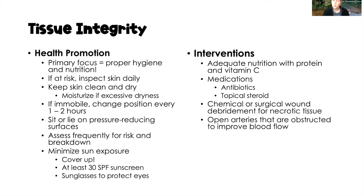If your client is immobile, we want to change their position every one to two hours, and we want to use pressure-reducing surfaces — such as a mattress, pad, or foam — to reduce pressure on bony prominences, especially for clients at high risk or with prolonged immobility. We also want to assess frequently for risk and breakdown using the Braden scale every shift, or even more frequently if the client is at very high risk or has already started to develop breakdown.